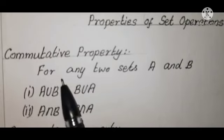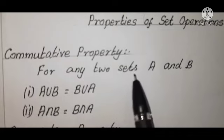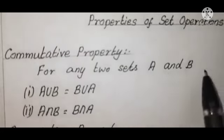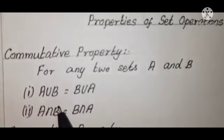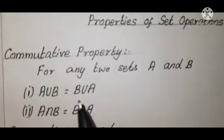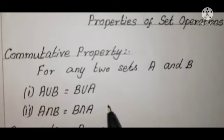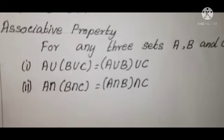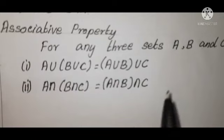To summarize: for any two sets A and B, the first property is A union B equals B union A, and the second is A intersection B equals B intersection A. Next, the associative property.